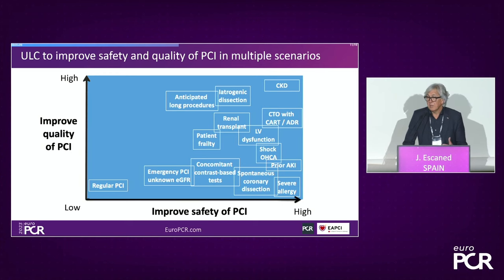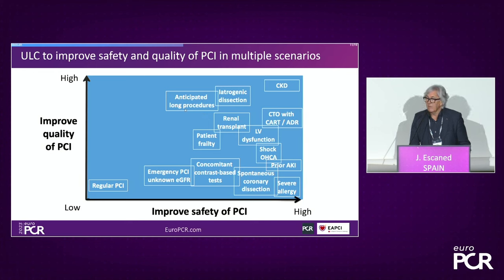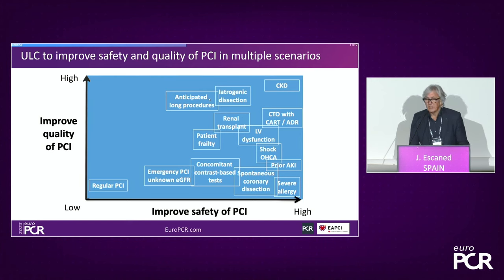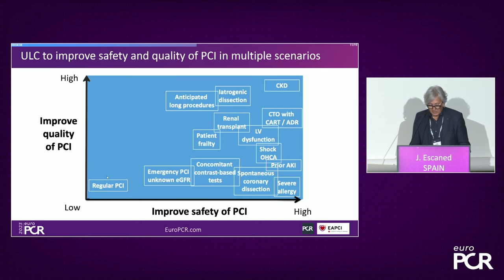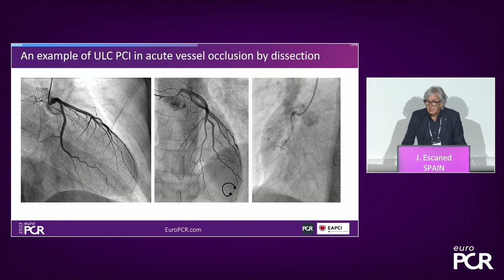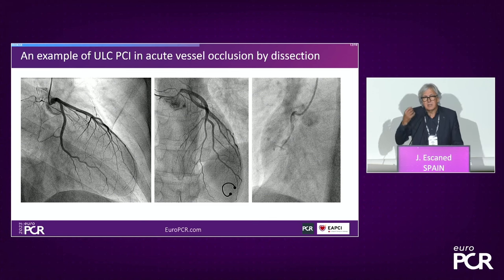The same applies to many other circumstances. In an anticipated long procedure, you improve the possibility of completing a thorough case with a higher degree of revascularization because you are not limited by the contrast amount given. On the other extreme, the benefit of ultra-low contrast PCI in a very simple case is not as high in terms of improving safety and quality. Once you have learned these skill sets, they apply to many different circumstances.